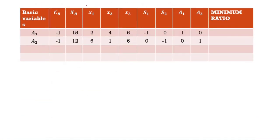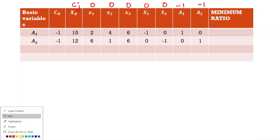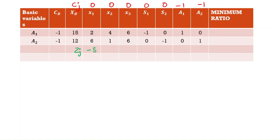Continuing with the initial table: the cj values are 0, 0, and -1, -1 for the artificial variables. The xB and coefficient columns for the x's, s's, and artificial variables are written. We calculate zj: zj = -2, -6, -8, -5, -12, 1, 0.